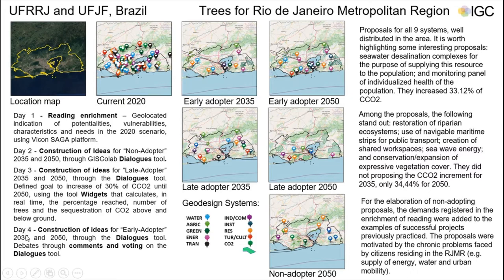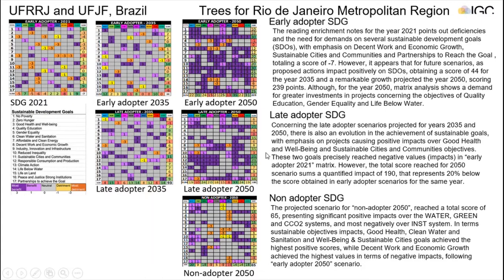In day four, we had the construction of ideas for early adopters for 2035 and 2050, and through the Dialogues tool we could comment, vote, and debate on these projects. All of these pictures were taken from the GIS Colab platform, and you can see the evolution of the scenarios for each year and modality of adoption. By observing the matrix for all scenarios, comparing project impacts over the 17 Sustainable Development Goals, we can see that we come from a negative scenario scoring minus 7 for the current situation in 2021, and as we go to 2035 the total score is 44 points, with more positive projects.